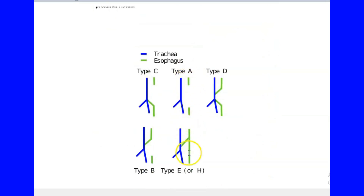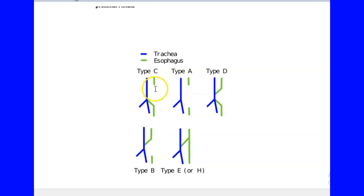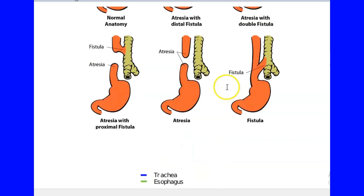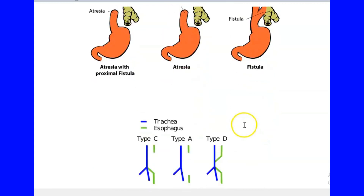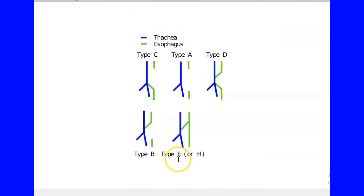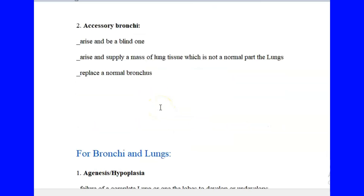These are classified as Type A through Type E. Type A is atresia on both sides — proximal and distal — with no fistula. Type B is atresia with a proximal fistula. Type C is atresia with a distal fistula. Type D is atresia with double fistula. Type E, also called Type H, is a fistula alone without atresia. These are the classifications of tracheoesophageal fistula.